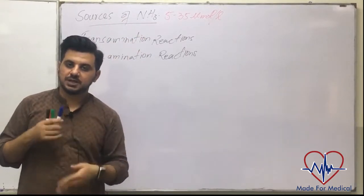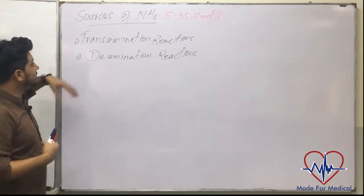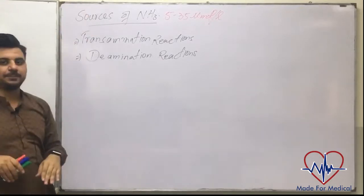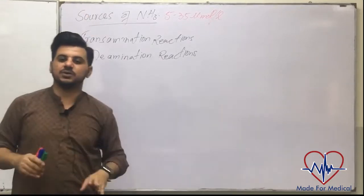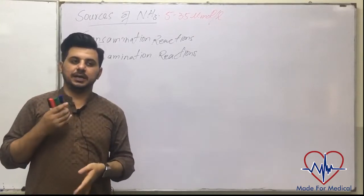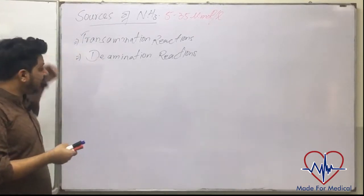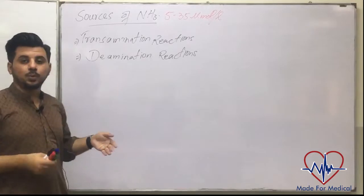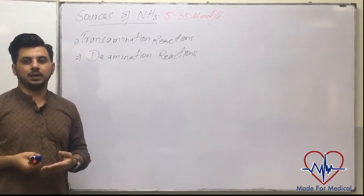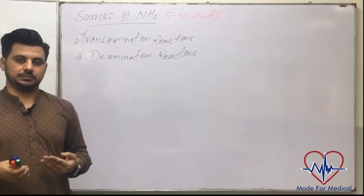The main topic here is: what are the sources of ammonia in our body other than amino acids? What are the other sources of ammonia which can be lethal and toxic to us?